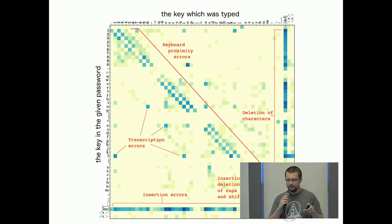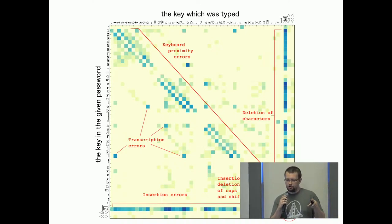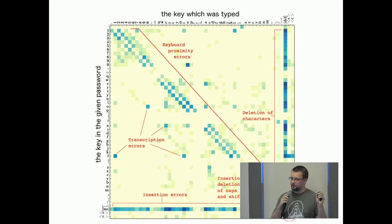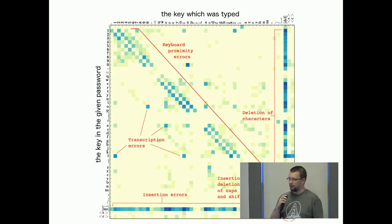Looking at the histogram, in the upper corner we see people were typing digits in some random way. On one axis we see what should be typed and on the other what was typed, and the color represents how often that kind of mistake occurred. Digits were mistyped all the time — there is a strong line across the entire square. People were typing the letter just next to the correct one. There were also a couple of typos where someone typed '1' instead of 'l' or '0' instead of 'o' and so on.